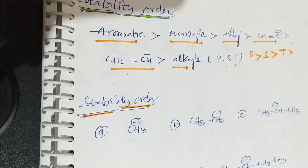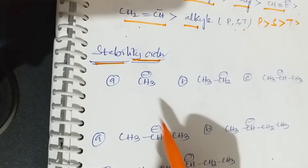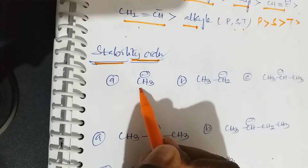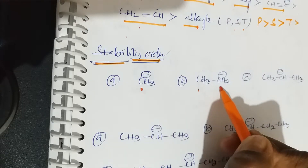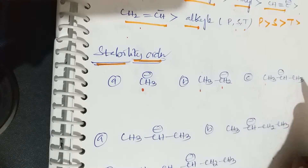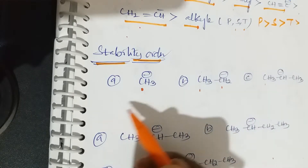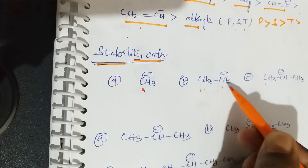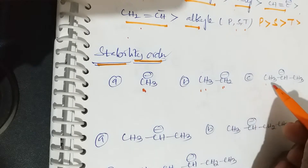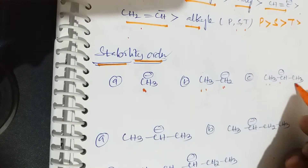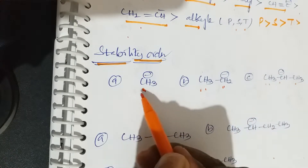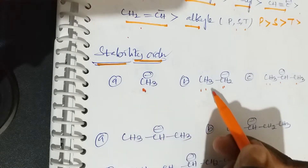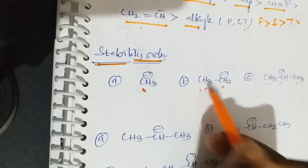For example, consider the stability order of the following compounds: CH3⁻ (methyl carbanion), ethyl carbanion (CH3CH2⁻), and CH3CH⁻CH3 (isopropyl carbanion).